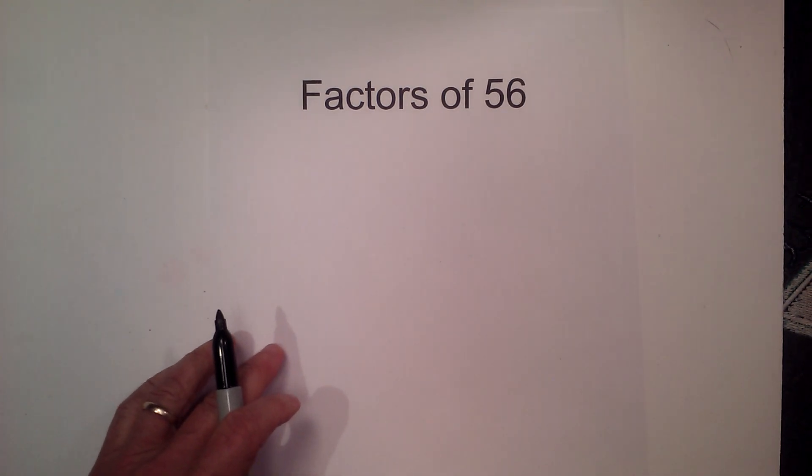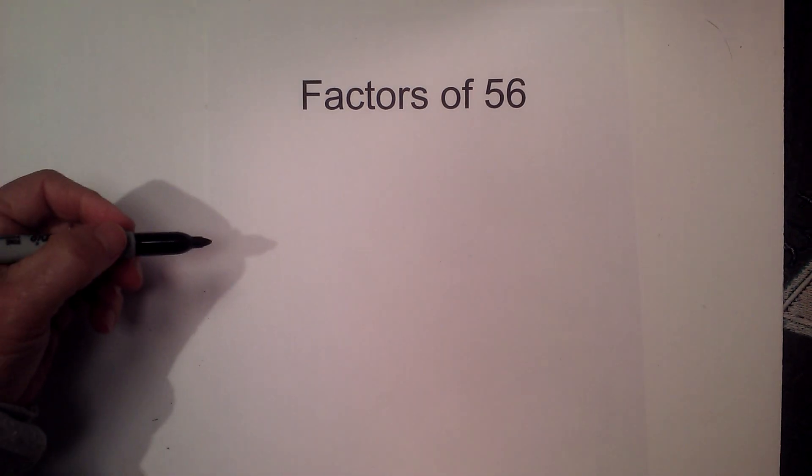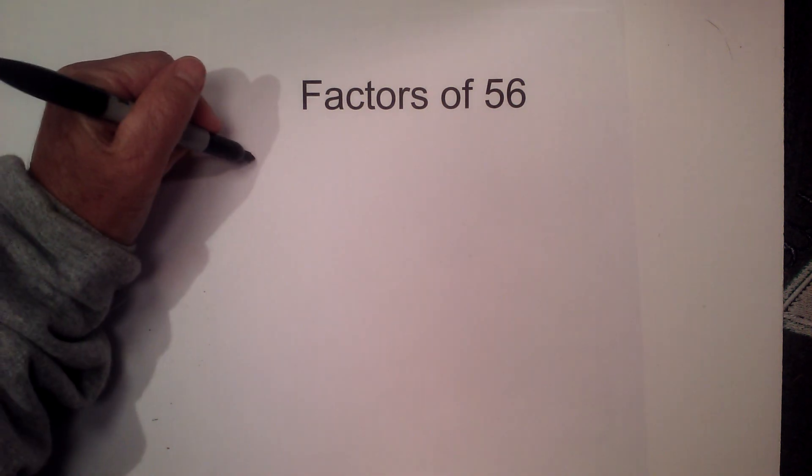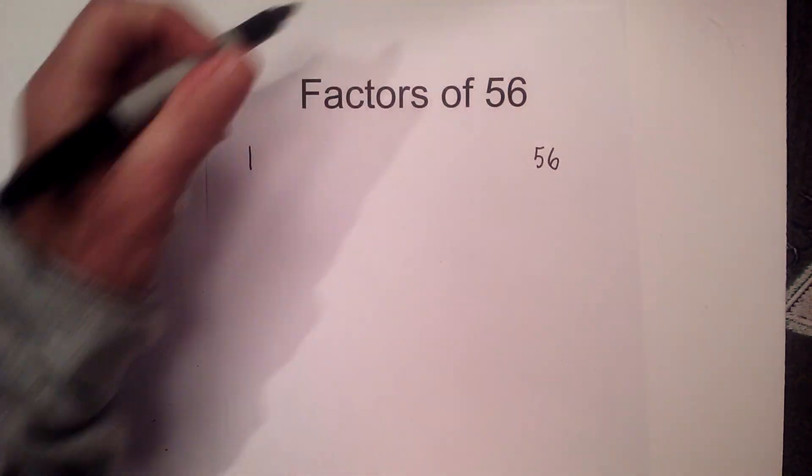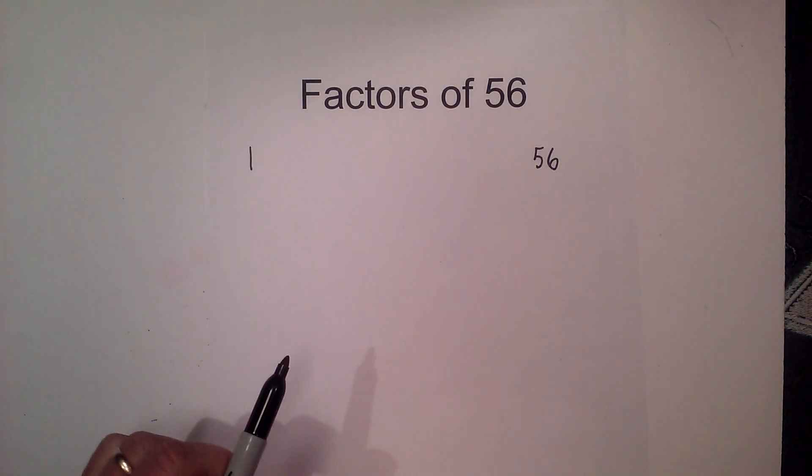Math and science. The factors of 56. I like to find the factors like this: I begin with 1 and 56, and then I'll find all the numbers in between that multiply together to equal 56.